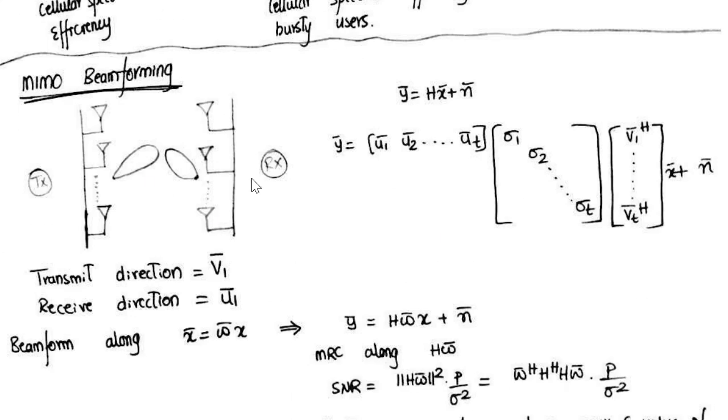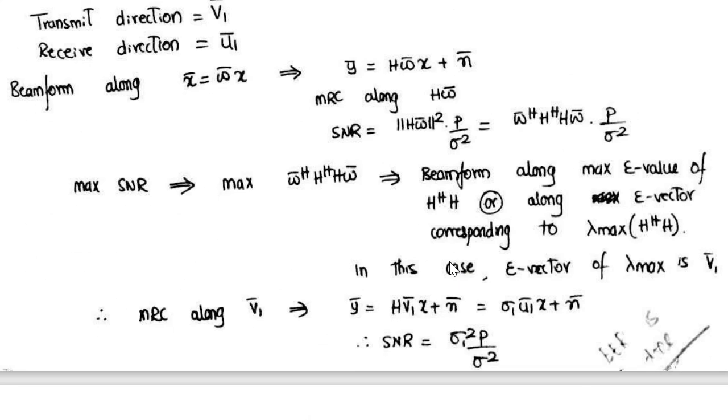At the end we have MIMO beamforming. This is the last concept I believe. Depending upon the transmit direction V and receive direction U, the beamforming is done. Transmit beamforming is done, that is what is showcased over here. If we take max SNR, this is coming to be H-hermitian H. As we have seen that forms the maximum eigenvalue, so it's like beamforming along the maximum eigenvalue of H-hermitian H. It's like an eigen-based beamforming concept. From here the eigen-based beamforming concept has been derived.